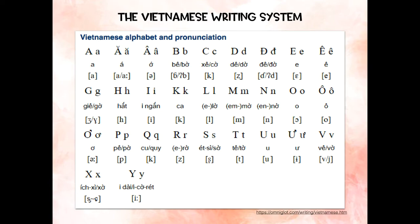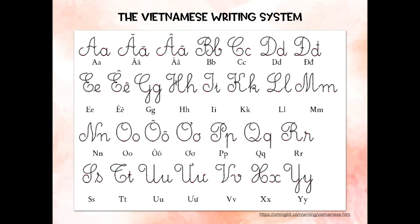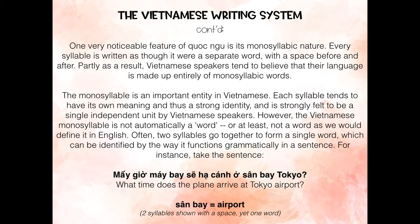Here is the Vietnamese writing system. The Vietnamese writing system also includes cursive. One very noticeable feature of Quốc Ngữ is its monosyllabic nature. Every syllable is written as though it were a separate word, with a space before and after. Partly as a result, Vietnamese speakers tend to believe that their language is made up entirely of monosyllabic words. The monosyllable is an important entity in Vietnamese.